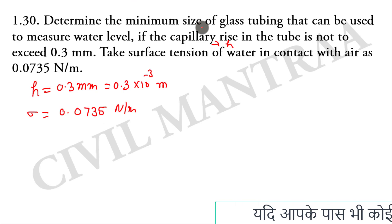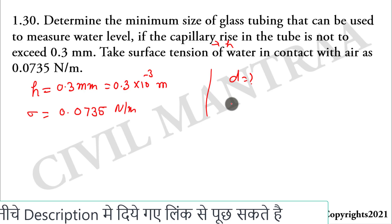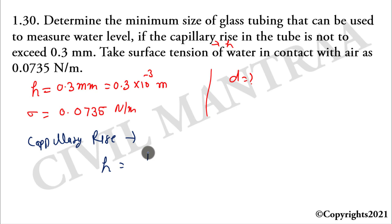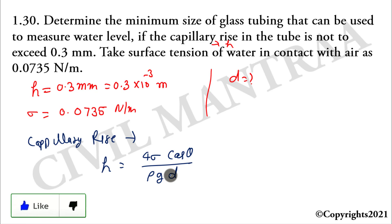हमको minimum size of glass tubing निकालनी है। हमको पता है कि capillary rise का formula है: h = 4σcosθ / (ρgd) — जहाँ 4 constant है, sigma surface tension है, theta contact angle है, rho density है, g gravity है, और d diameter of tube है।